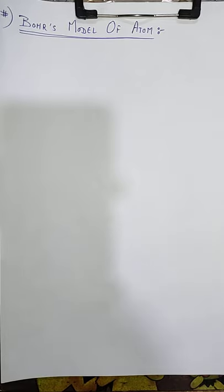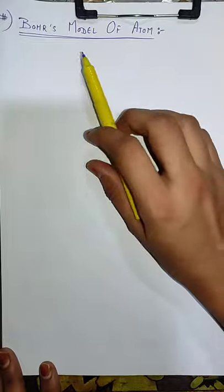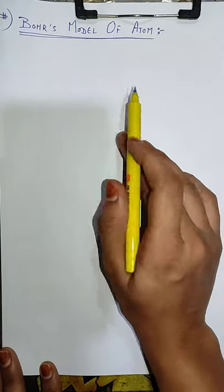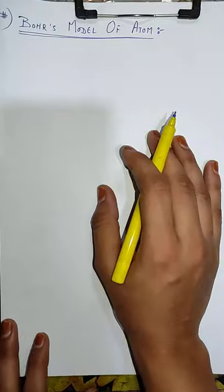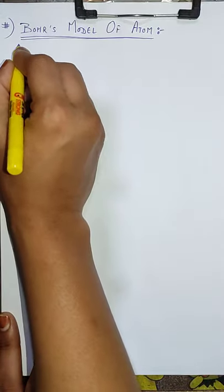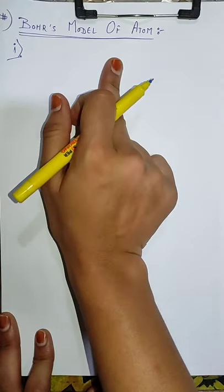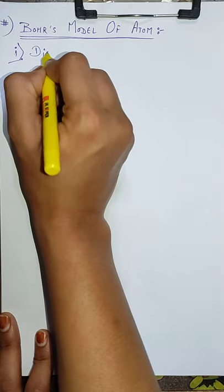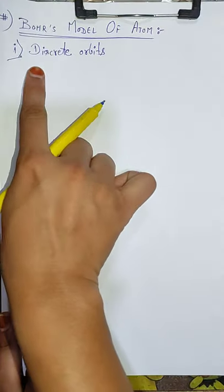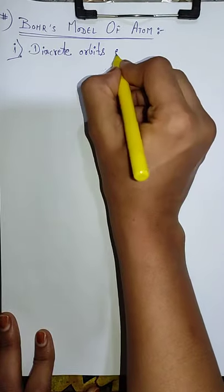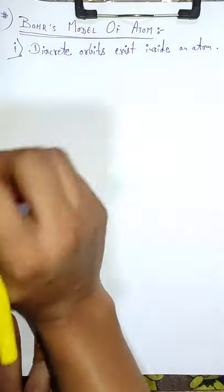Rutherford ke atomic model mein itni khaas baatein hote huay bhi jo ek major drawback thi, usse overcome karne ke liye Bohr's atomic model aaya. Nils Bohr ne atom ko define karte huay apna ek alag se model put up kiya. Jiske andar major postulates jo unhone diye woh is tariqe se the — first one was: only certain special orbits, jinko discrete orbits bola jaaye, wahi allowed hain ek atom ke andar. Yani orbits nahin, balki discrete orbits honge — aise certain orbits jinki ek apni fixed energy hoti hai.